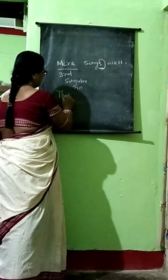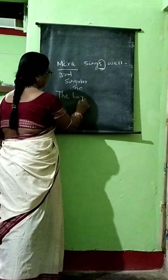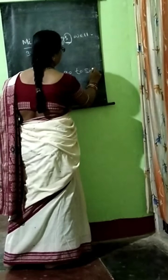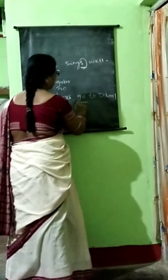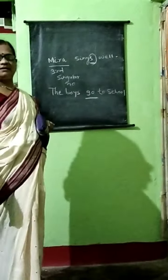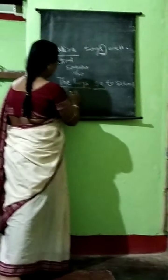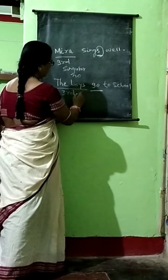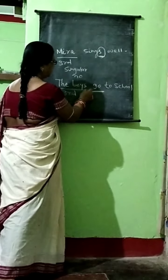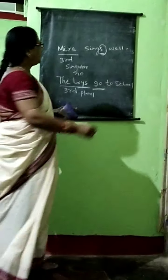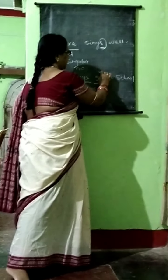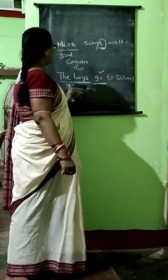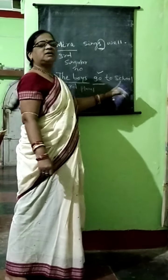The boys go to school. Why does the verb not take an 'S' here? Because 'the boys' is third person plural number. When the subject is plural, the verb does not add 'S'. So: the boys go to school.